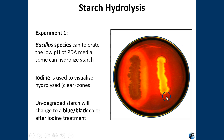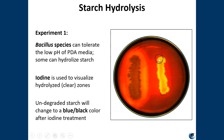Iodine has been added to the surface of the plate and it reacts to make a dark color. The specimen on the left shows a clearing zone around the bacteria — that's where the starch has been hydrolyzed, the zone of hydrolysis. Over here you don't see that clearing, so that means this specimen is negative for starch hydrolysis.